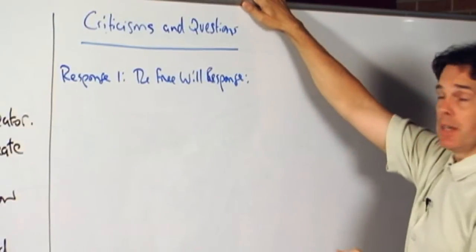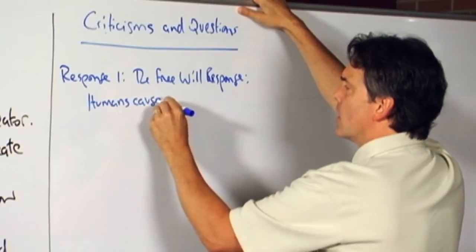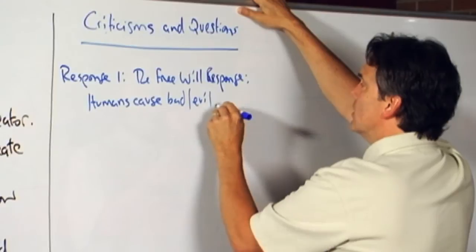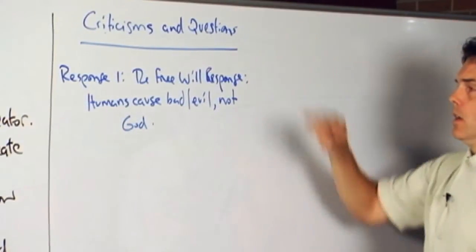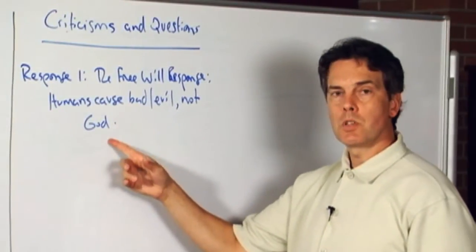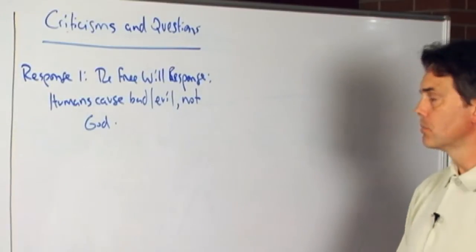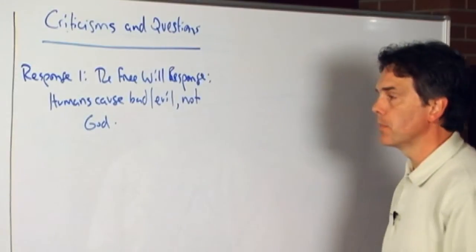And the argument here is that humans cause all of the bad and the evil in the world, not God. God is omnipotent, omniscient, omnibenevolent, perfect creator. It's human beings who come along and mess things up.